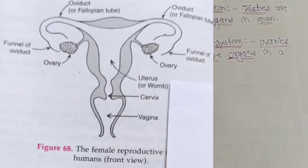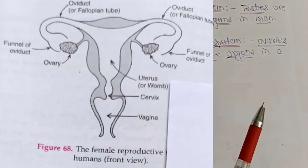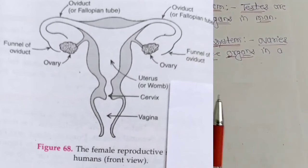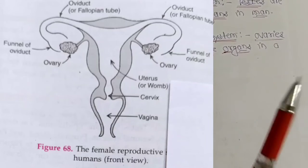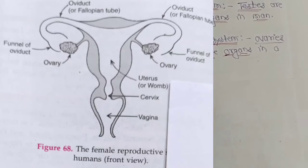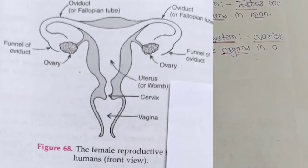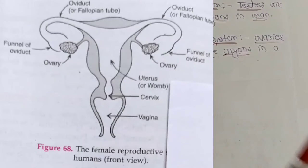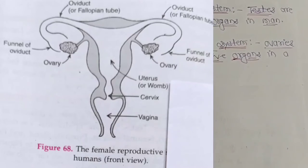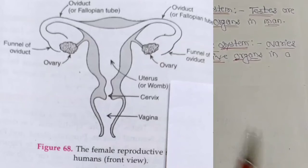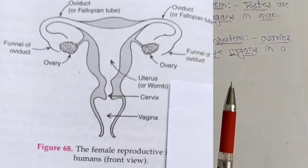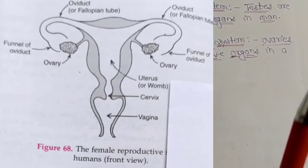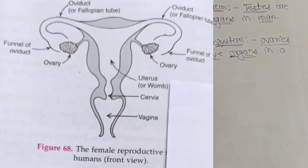The ovaries are composed of several thousand follicles, which are a kind of unripe eggs or ova. At puberty, these follicles mature to form ripe eggs required for fertilization. Next to the ovaries are tubes called oviducts. The oviducts are not directly connected to the ovaries but have a funnel-shaped opening that almost covers the ovaries. The ovum released by an ovary goes into the oviduct. Fertilization of the egg by sperm takes place in the oviduct. The two oviducts connect to a bag-like organ called the uterus. Growth and development of the fertilized ovum into a baby takes place in the uterus.